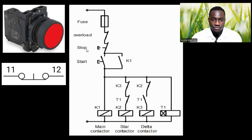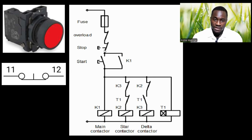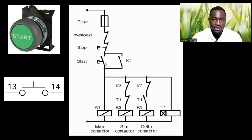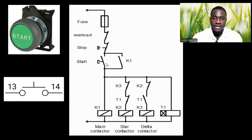The next point is the stop push button. We are going to be using the normally closed push button as a stop push button. When you press the push button, when your hand is released, the contact retracts back to its normal state and closes the contact again. The next is our start push button, which is a normally open contact. When you press it, it extends and closes the contact. When your hand is released from the push button, it retracts back and goes back to its normal open position.